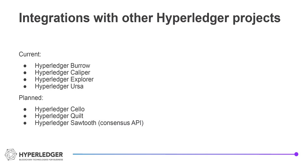Iroha has integrations with many Hyperledger projects: Burrow, Caliper, Explorer, and Ursa. We plan to extend this list with Cello, Iroha, and Sawtooth consensus API.